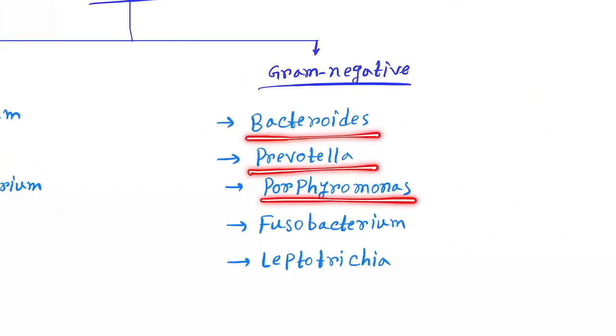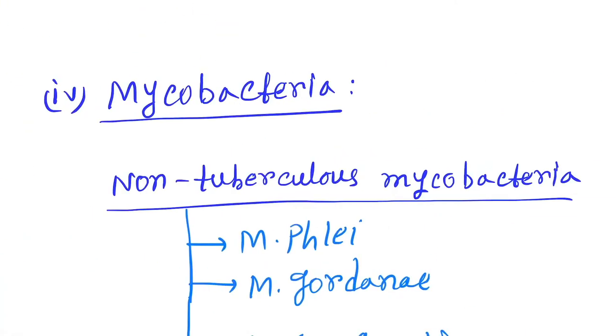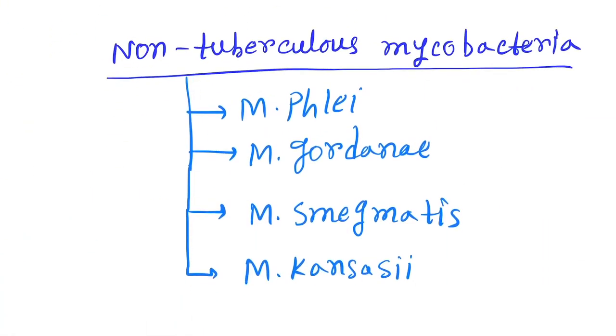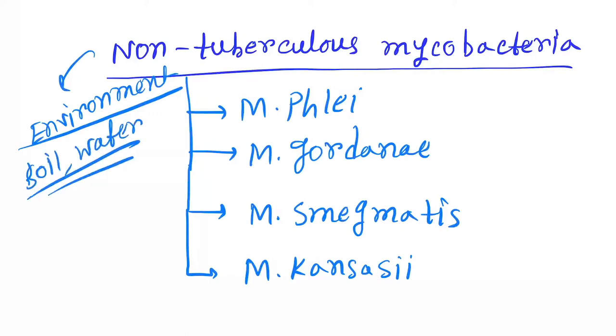Next is Mycobacteria. Here it is non-tuberculous mycobacteria, also called environmental mycobacteria because you can get this from soil, water, etc. They are Mycobacterium phlei, Mycobacterium gordonae, Mycobacterium smegmatis, and Mycobacterium kansasii.